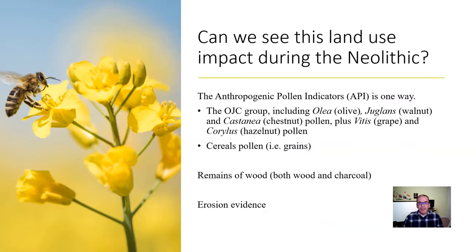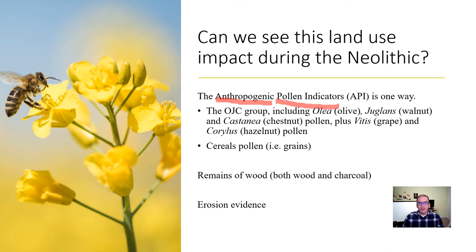So the important question is: can we see this land use impact in the Neolithic? And the answer is definitely yes. A couple of lectures ago we looked at the list of sources you can pull from — mostly archaeology in the early period — and that's still the case here. You can use pollen. Anthropogenic — that just means use by people — pollen indicators refer to plants that are being used by people, and you can measure the pollen.